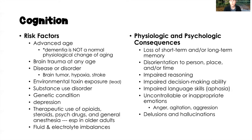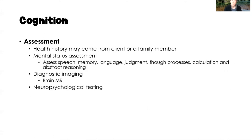Physiologic and psychological consequences of impaired cognition include loss of short-term and/or long-term memory, disorientation to person, place, and/or time, impaired reasoning, impaired decision-making ability, and impaired language skills — that is, aphasia. Clients may also experience uncontrollable or inappropriate emotions. In dementia, we often see excessive anger, agitation, and aggression, which may require treatment with psychiatric medications. Delusions and hallucinations can also occur.